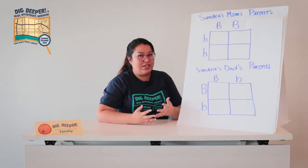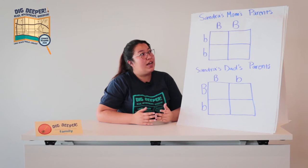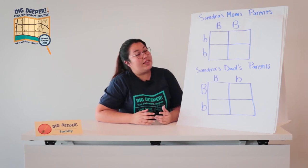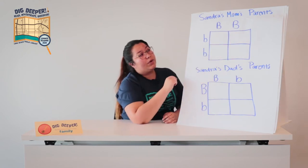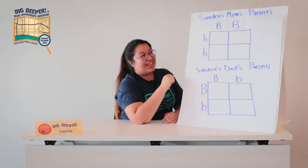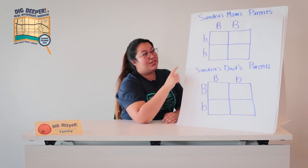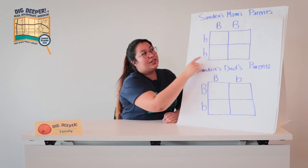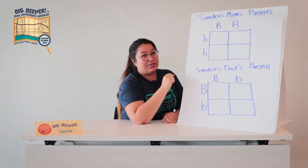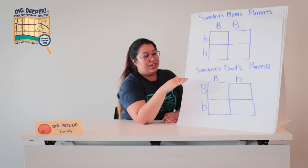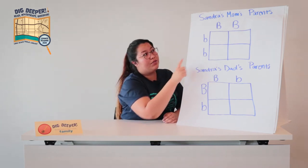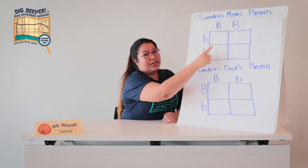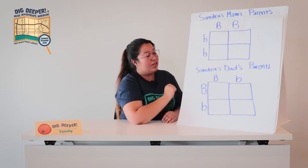It doesn't matter if you put male or female on either side, but typically male goes on top and female goes to the left. Let's say Sandra's grandfather on her mom's side has a homozygous pairing for brown eyes — that means he'll have a big B and a big B. Whereas her grandmother has a homozygous pairing for green eyes, which is a little b and a little b. Dominant alleles will have capital letters and recessive alleles will have lowercase letters, always.